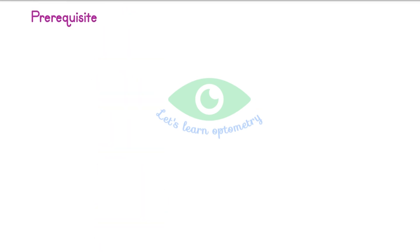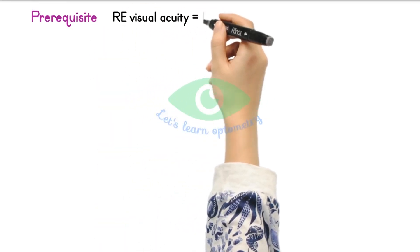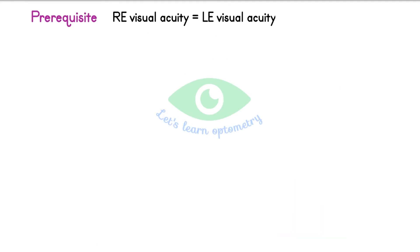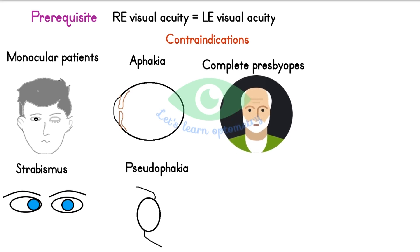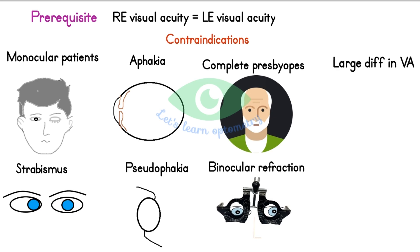The prerequisite for binocular balancing test is that both eyes should have equal visual acuity. This test is not indicated in monocular patients, strabismus, aphakia, pseudophakia, complete presbyopes after 60 years, if binocular subjective refraction was performed earlier, if there is large difference in visual acuity between both eyes, suppression, and amblyopia.